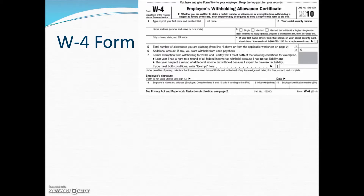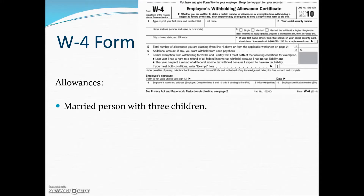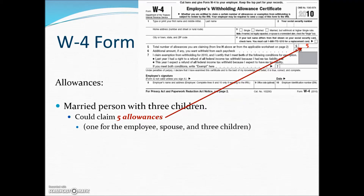Each employee must file a W-4 form with his or her employer. On this form, the employee states the number of withholding allowances being claimed along with additional information so that the employer can withhold the proper amount for income tax. For example, if we have a person that's married with three children, they could claim a total of five allowances — one for themselves and their spouse along with the three children.